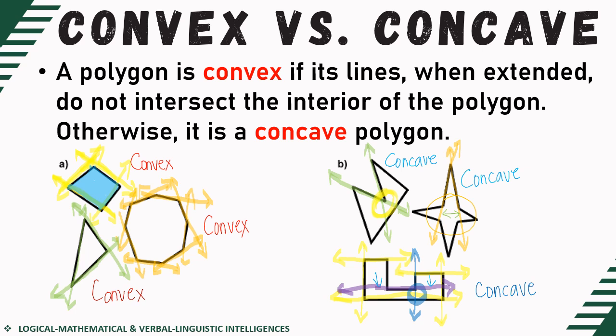Hopefully you can now distinguish whether a given polygon is convex or concave. By the way, generally, if the given figure is not considered a polygon, there's no need to identify if it's convex or concave. We can only classify if it's convex or concave provided that it's already considered a polygon.